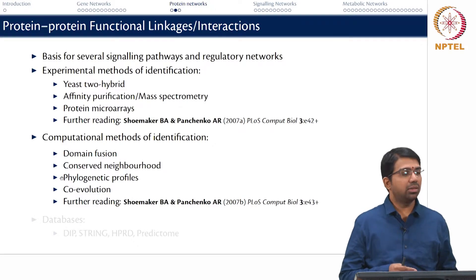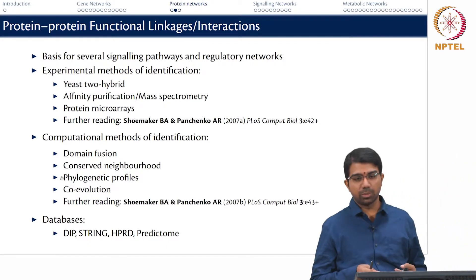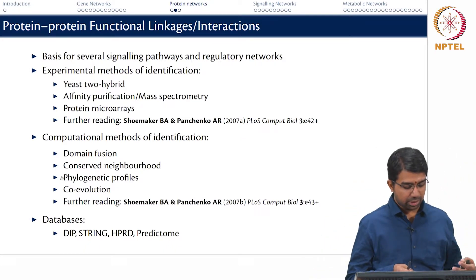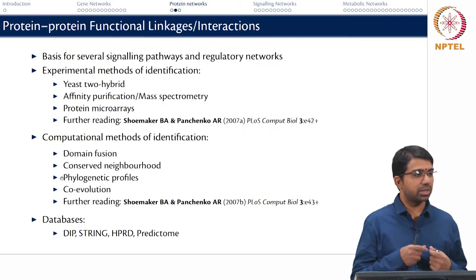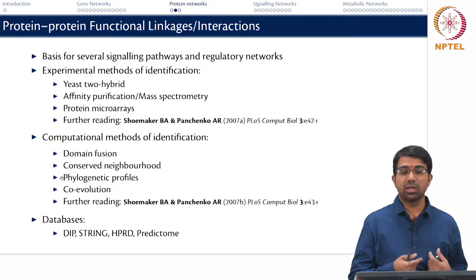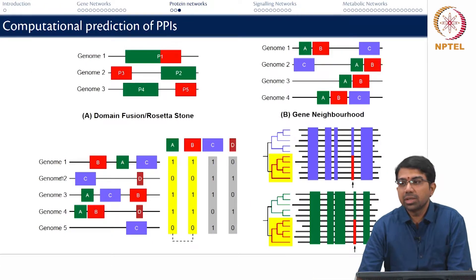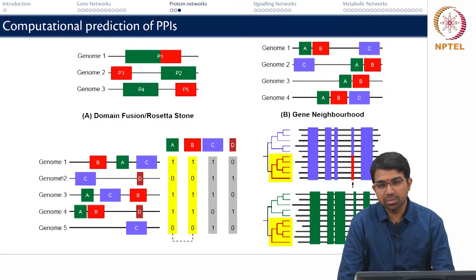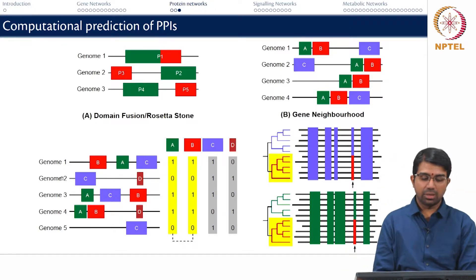We will see how that is done. There are a lot of databases available — database of interacting proteins, human protein database, and STRING. We will look at all these in a later class where we will study the different types of databases helpful for building, studying, and analyzing these kinds of networks. So how do you computationally predict protein-protein interactions? There are many interesting methods, and these are all essentially based on genomic context or genome sequence.